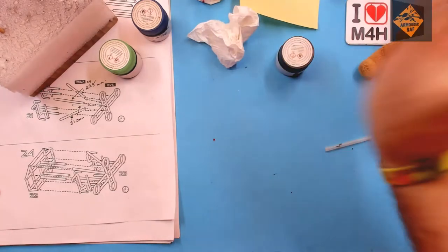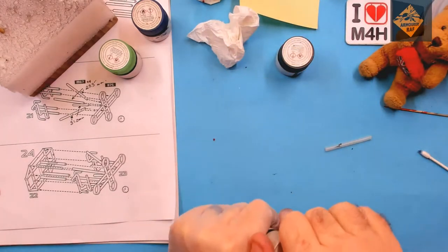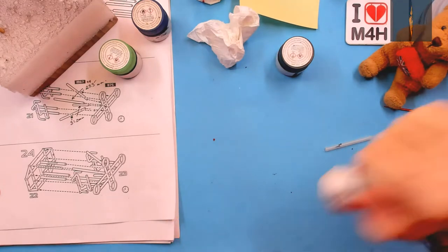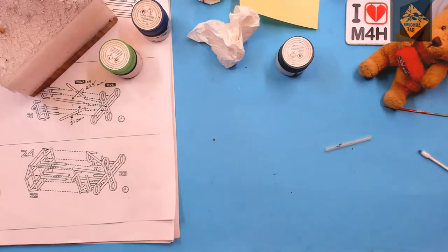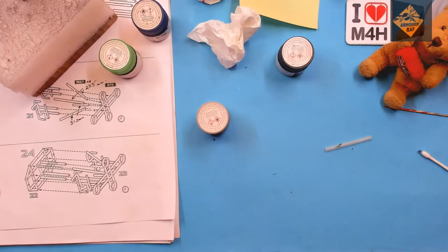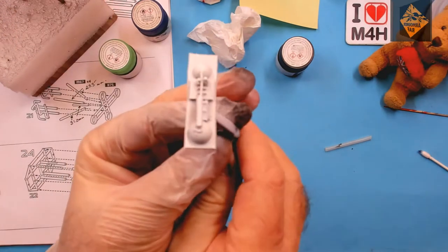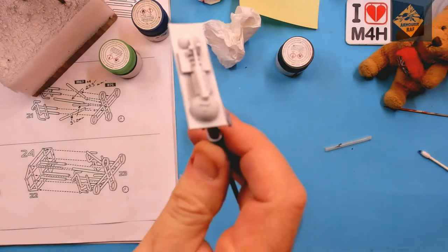Now it's time to break out the Tamiya X32 Titanium Silver, this is a great colour as it can cover an absolute multitude of sins, as well as act as different types of silvers. I'll be using this on Neil, Dave, Rita and Sue.